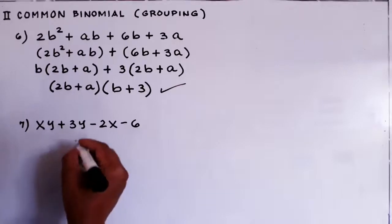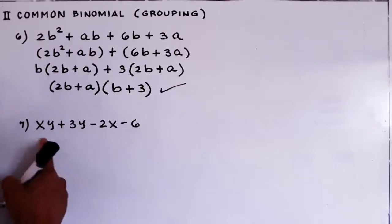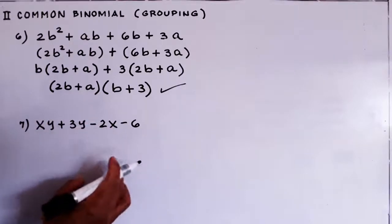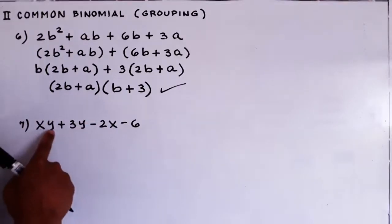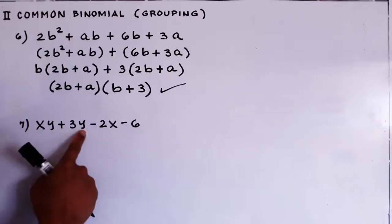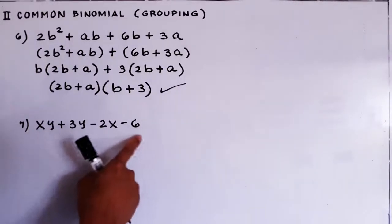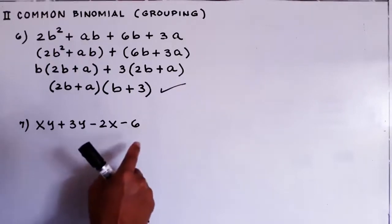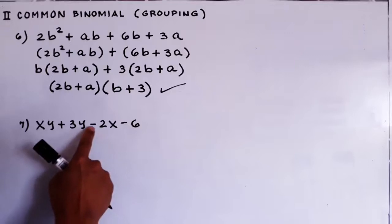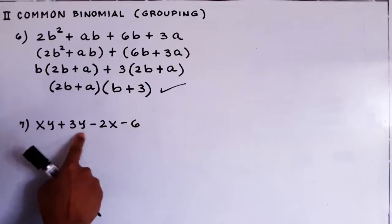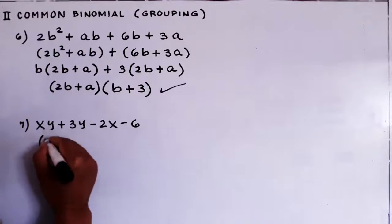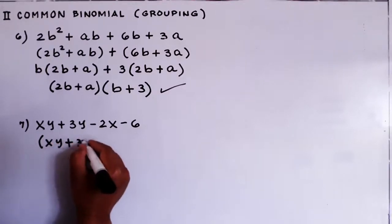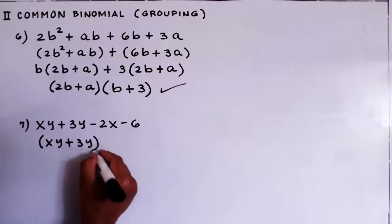Okay, number seven — we have the last one here. We need to group this one. Do we need to rearrange? We already have a y here and a y here, and also we can have our common monomial which is 2 here. But be careful class, because this one has a minus. We don't have any problem with the first group — we just put it inside parentheses: xy plus 3y.